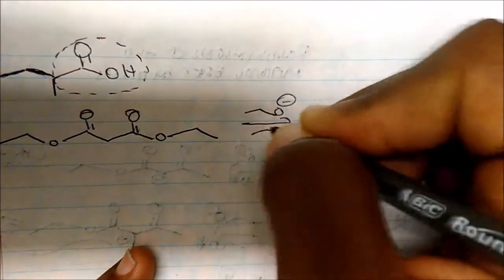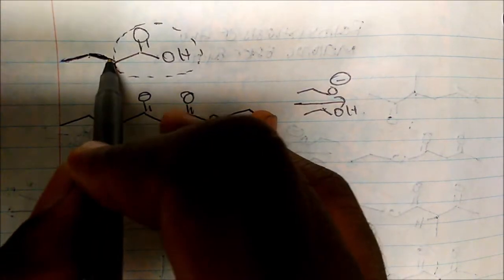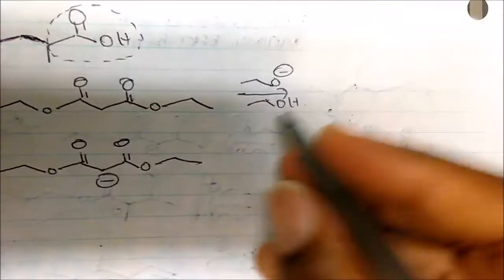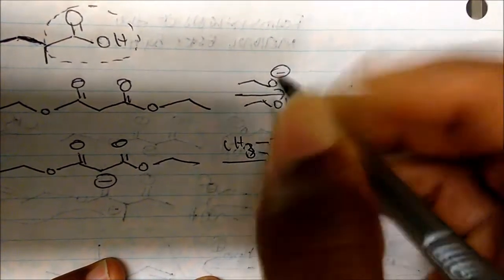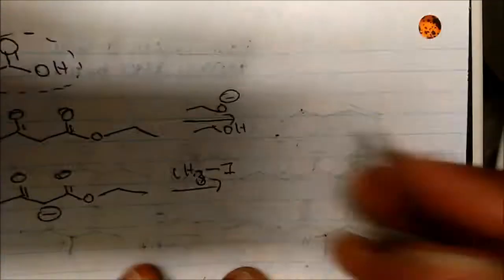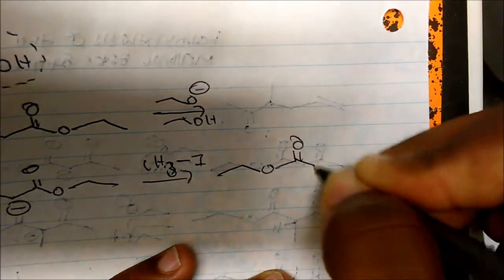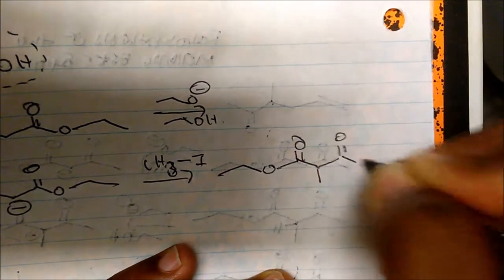We know the malonic ester synthesis and we know diethylmalonate. So we take diethylmalonate and add it in base. That will give us a negative charge on the alpha carbon. I see an ethyl group — one, two — with an alkyl group at the end, and a methyl group with an alkyl group at the end. So I could add CH3I, methyl iodide, and that gives me the methyl group on the alpha carbon.